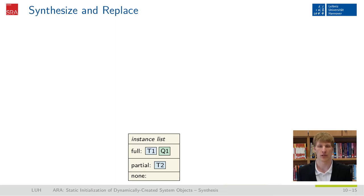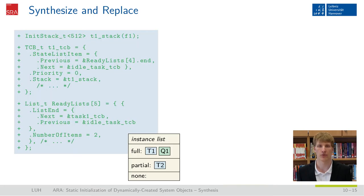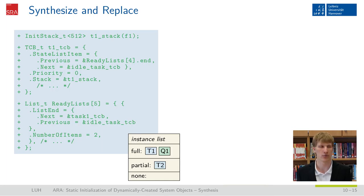Based on this classification, we step into the synthesis phase. First, we use the instance list to generate the operating system objects statically. For task T1, for example, we generate the stack with the according size and with its entry function as initial parameter. Additionally, we generate the task control block used by the operating system to store information about the runtime state of this task — for example, the current stack pointer and its position inside the ready list. Furthermore, we generate the scheduler's ready list, one for each priority, with the schedulable tasks already enqueued.